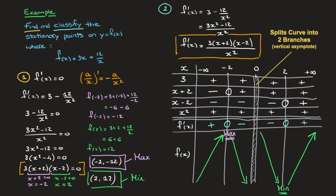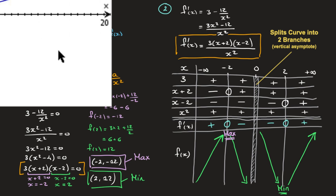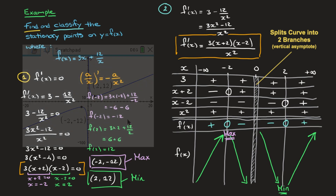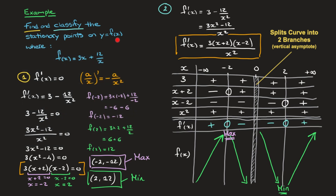Going back to the graph shown at the beginning, our results confirm everything we saw. The branch in the third quadrant increases, reaches a local maximum, then decreases. The branch in the first quadrant decreases, reaches a local minimum, then increases. We've now reached our objective: we know how to find and classify the stationary points on a curve by studying the sign of the first derivative.